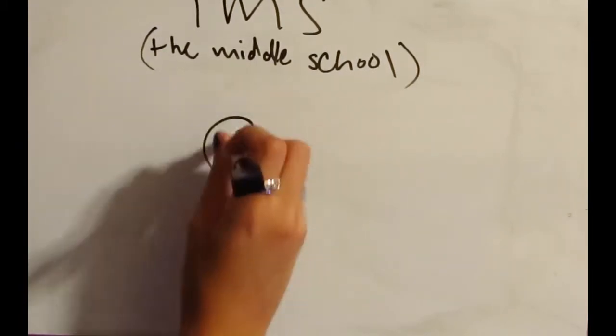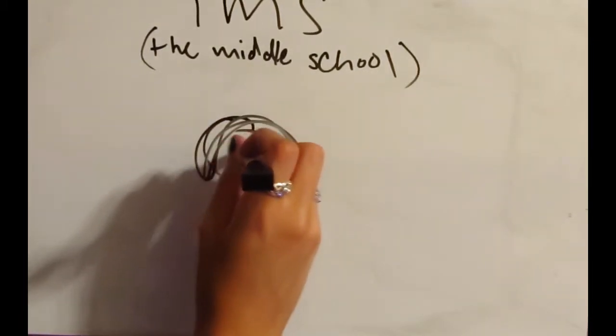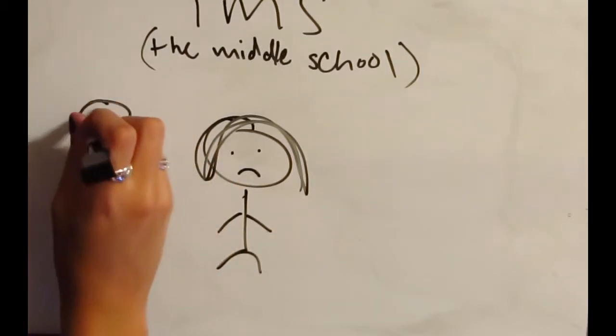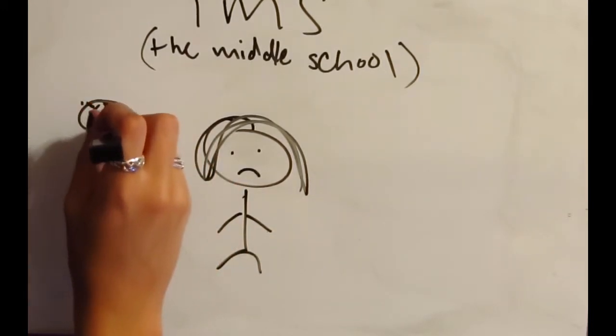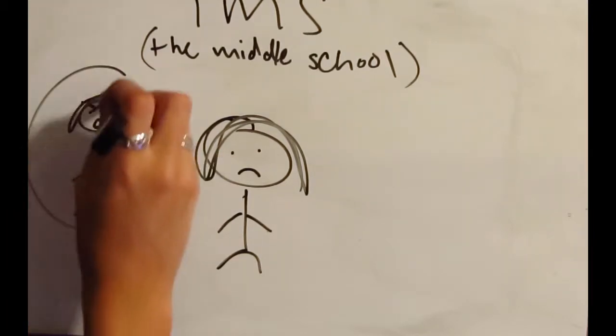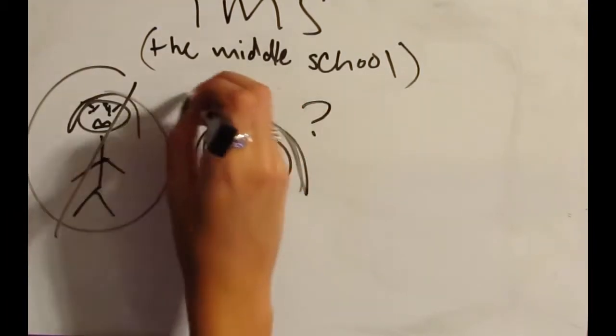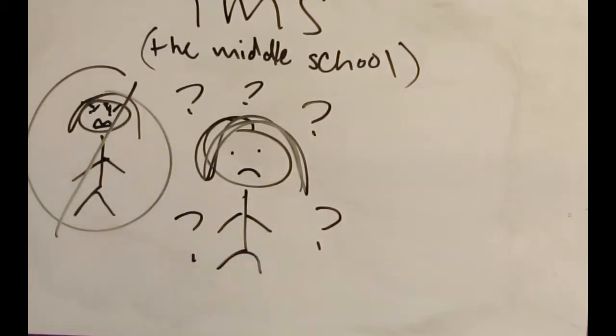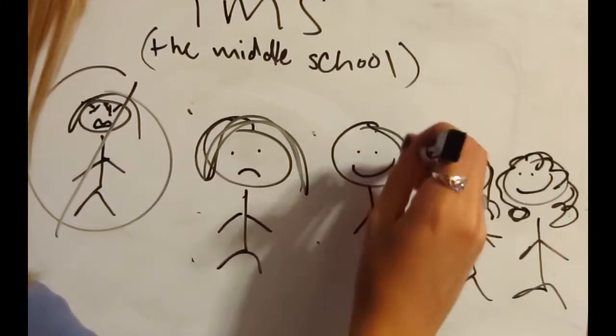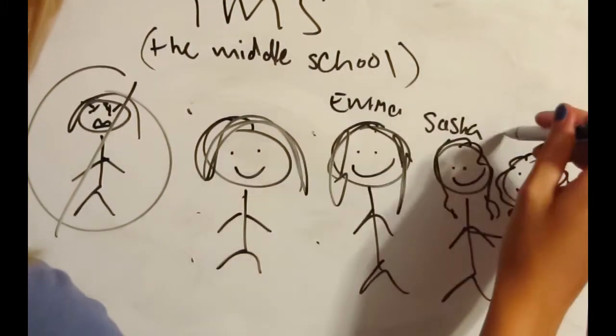And then began the dreaded middle school years, aka three years of awkward. As per the norm, middle school basically sucked and was full of awkward situations, rejections, and not really knowing who I was or what I liked. It was also that time when the people in elementary school, who were pretty neat, became total ass-butts. However, even though those three years sucked, without them I never would have met my three best friends, Emma, Sasha, and Corinne.